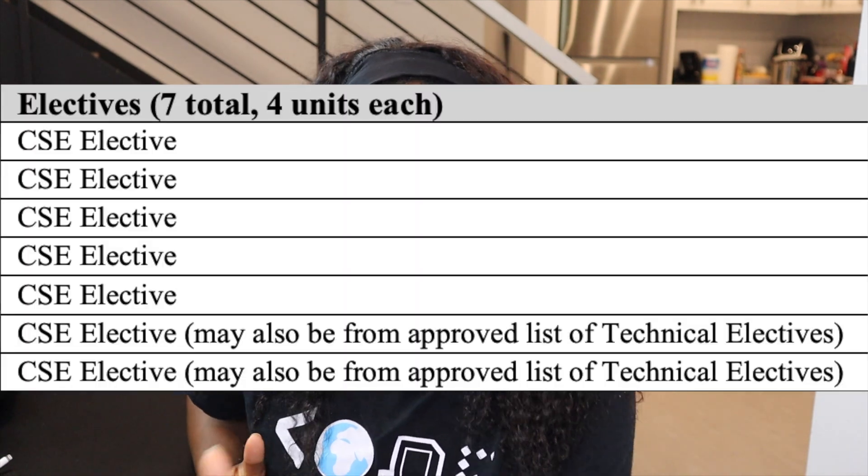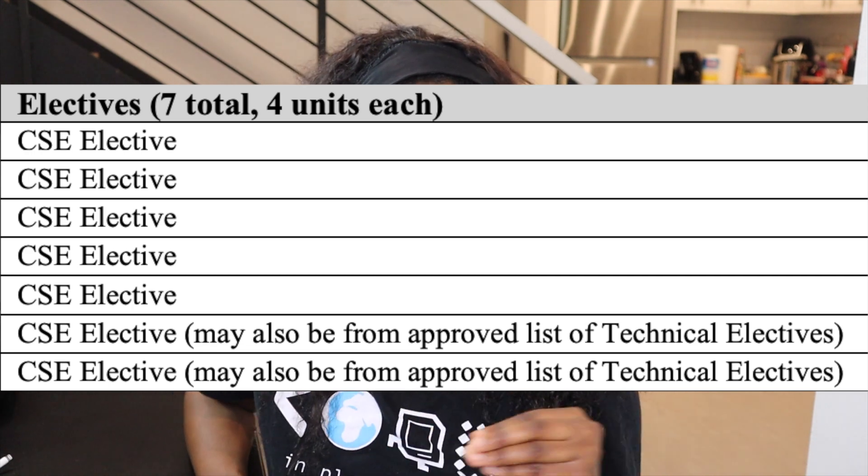We also had to take seven electives — so you're kind of exploring different niches within computer science. For example, you could take a security class and learn about different types of attacks, or a computer vision class. I hated that class. The teacher wrote in chalk, the majority of people dropped it because it was so hard, and I should have dropped it too but I played myself. It involved a lot of tricky math and it just wasn't for me.